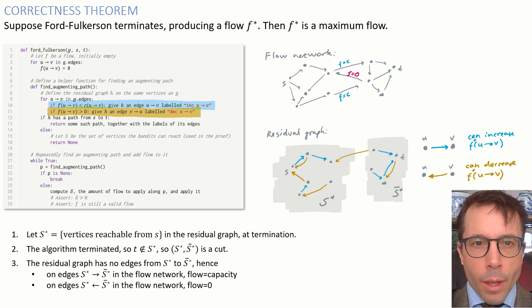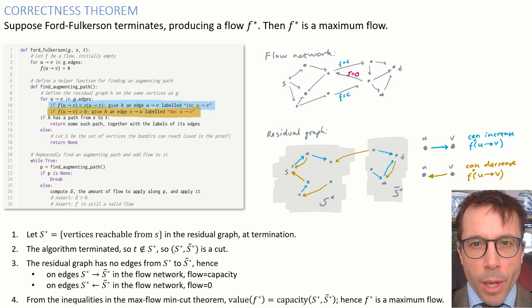Let's repeat. The flow on every edge from the left-hand side to the right-hand side is equal to capacity, and the flow on every edge from the right-hand side to the left is zero. What we said about the max-flow min-cut theorem tells us that this flow is therefore a maximum flow, QED.